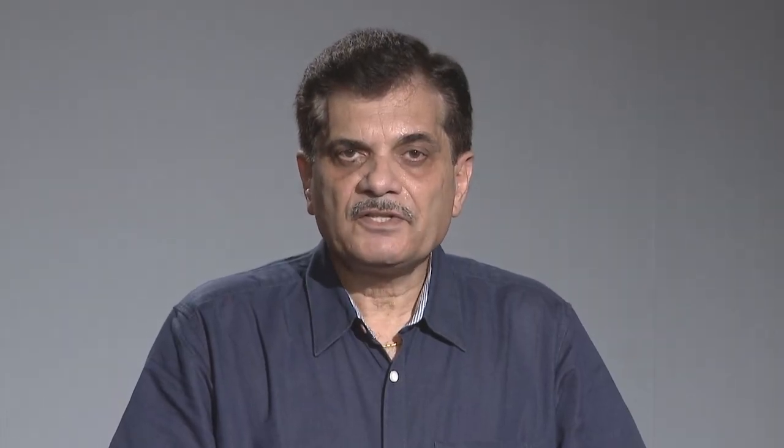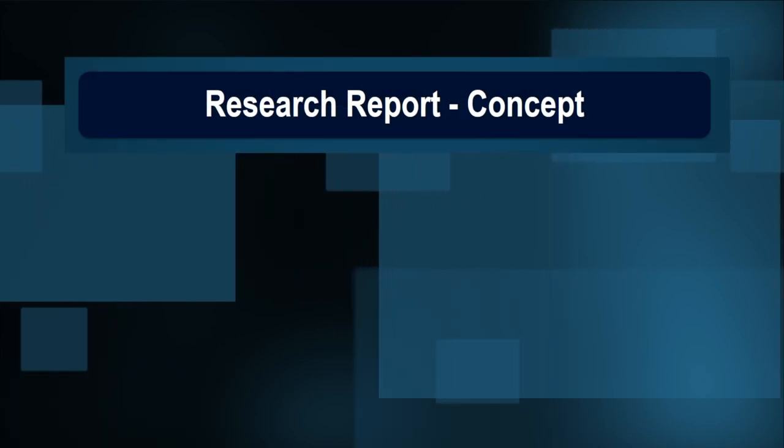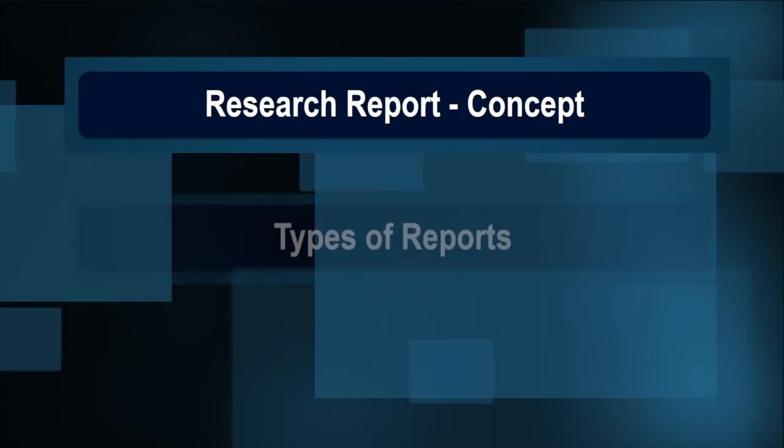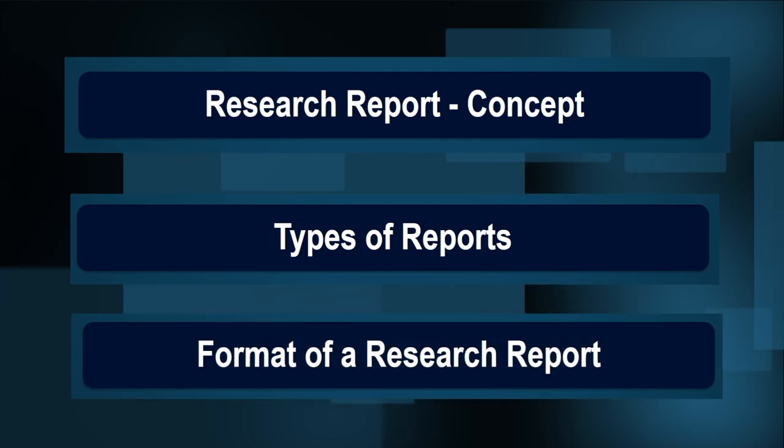Dear learners, in this video we have understood the concept of research report, its various types, and the format of a research report, which may have three sections: the preliminary material, the body of the report, and the reference material. Thank you very much.